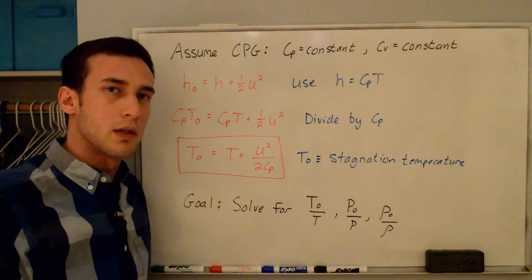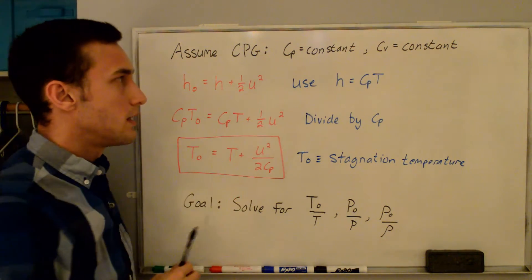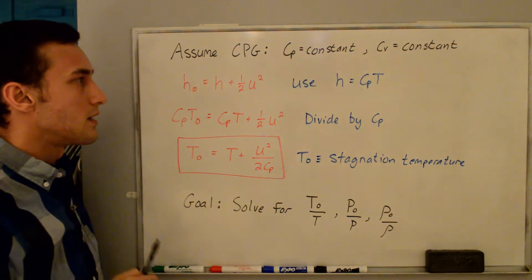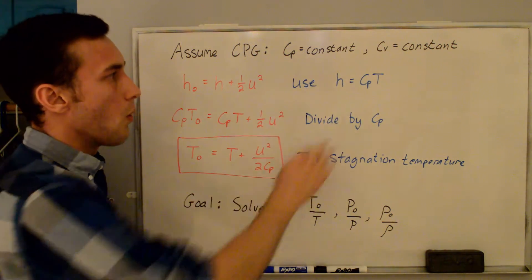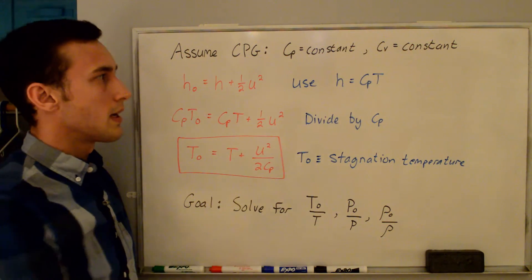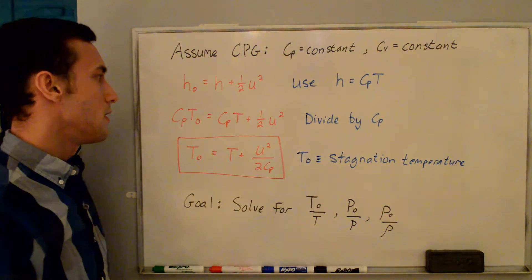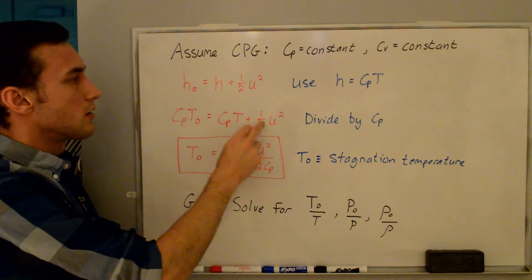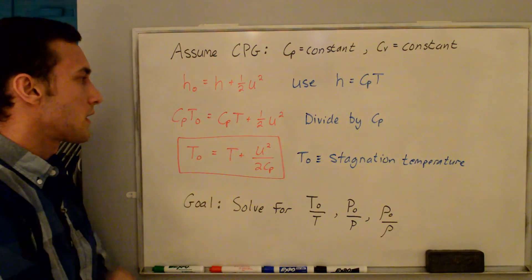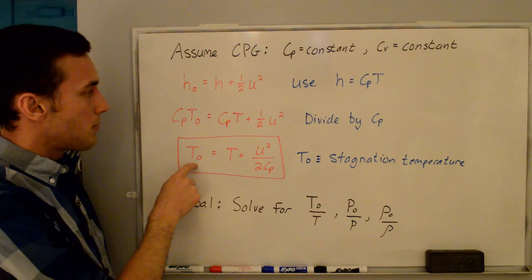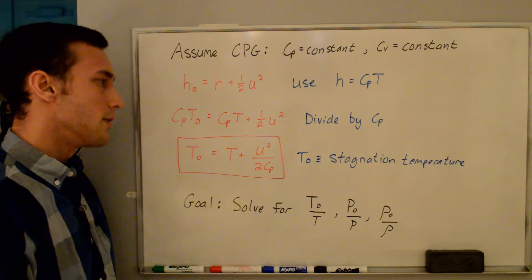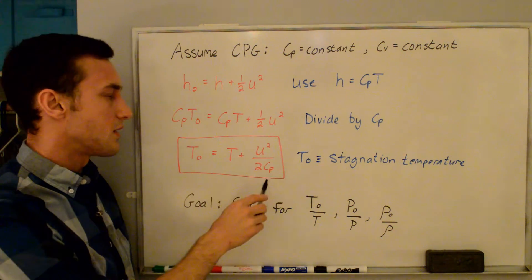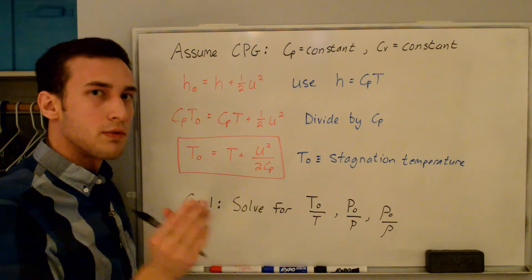The next thing is to assume we are dealing with a calorically perfect gas, meaning specific heats are constant: CP = constant, CV = constant. Using H = CPT, where CP is a constant that does not vary with temperature, we substitute into the stagnation enthalpy equation. We get CPT naught = CPT + ½V². Dividing the entire equation by CP gives us the stagnation temperature: T naught = T + U²/(2CP). This is based on adiabatically slowing down the flow to zero velocity.